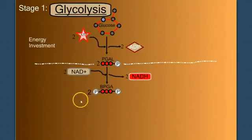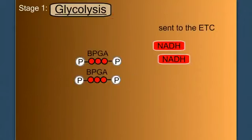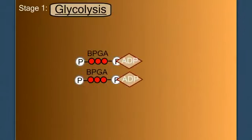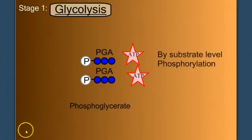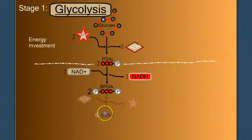So now we have BPGA, or biphosphoglycerate. Let's look what happens to those molecules. The BPGA will phosphorylate ADP into ATP, and BPGA becomes PGA, or phosphoglycerate. And these ATP were made by substrate-level phosphorylation. Let's add that to our flowchart here. So the BPGA phosphorylate ADP into ATP, becoming phosphoglycerate.